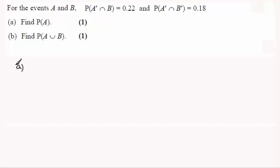So for the first one we've got to work out the probability of A. And in order to do this I think it would be quite a good idea to draw a Venn diagram to illustrate the information we're given.